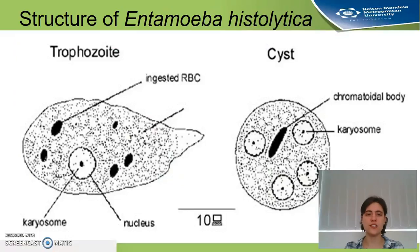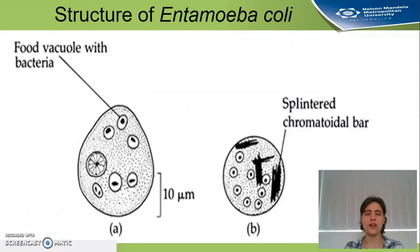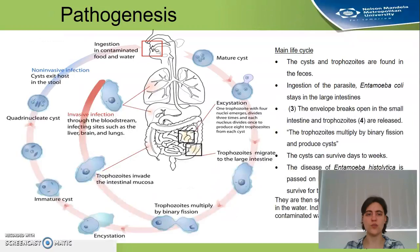On the left-hand side you can see the trophozoite of Entamoeba histolytica with the ingested red blood cells, and the cyst on the right-hand side which has the four nuclei. Also shown is the trophozoite of Entamoeba coli, and the cyst which has the eight nuclei — which is how you diagnostically identify it.